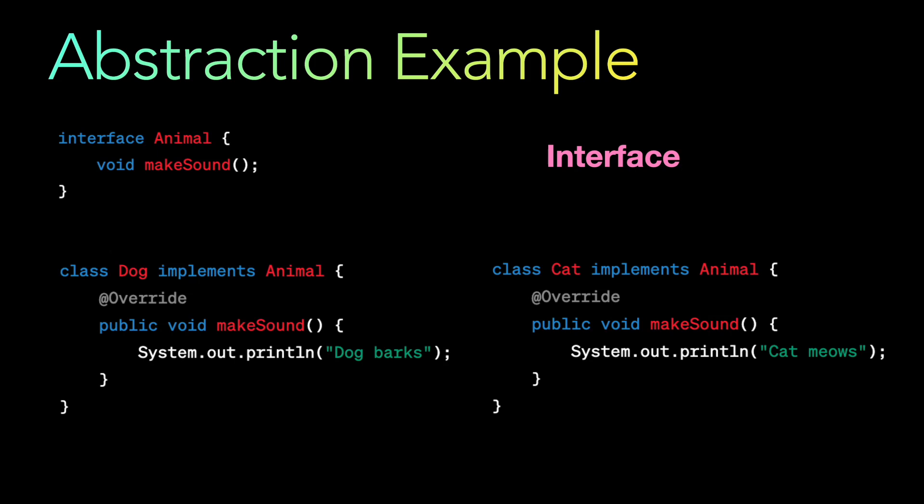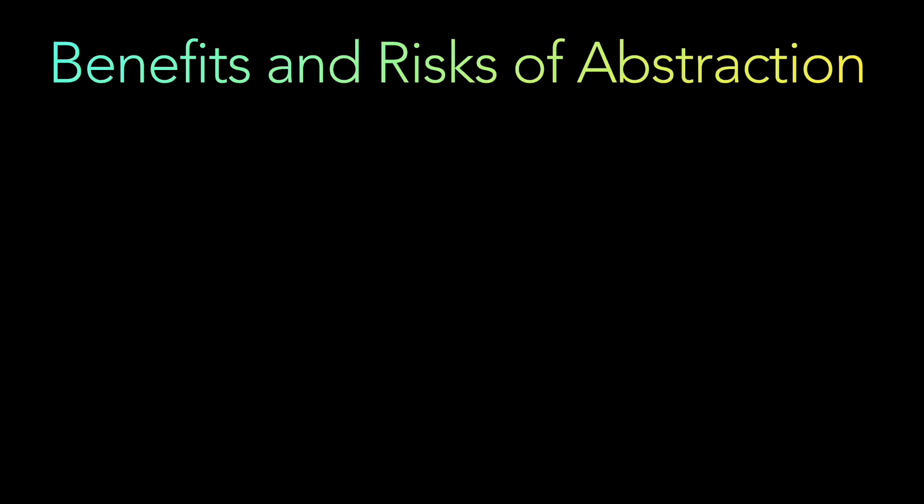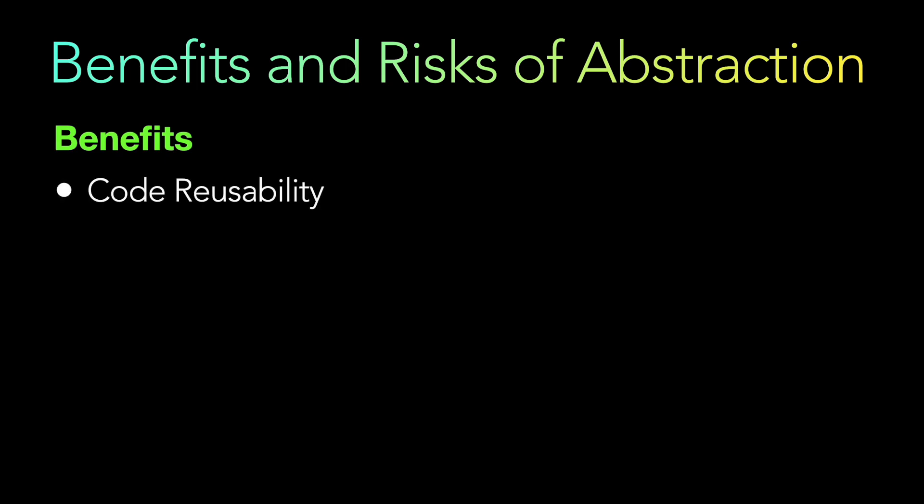Now what are the benefits and risks associated with abstraction? When you create SDKs or JDKs you define contracts but hide the implementation. The first benefit is definitely code reusability. Abstract classes and interfaces provide a way to define common behaviors — like we saw with the Animal or Vehicle classes — and methods that can be reused across multiple classes, which promotes code reusability and reduces code duplication.